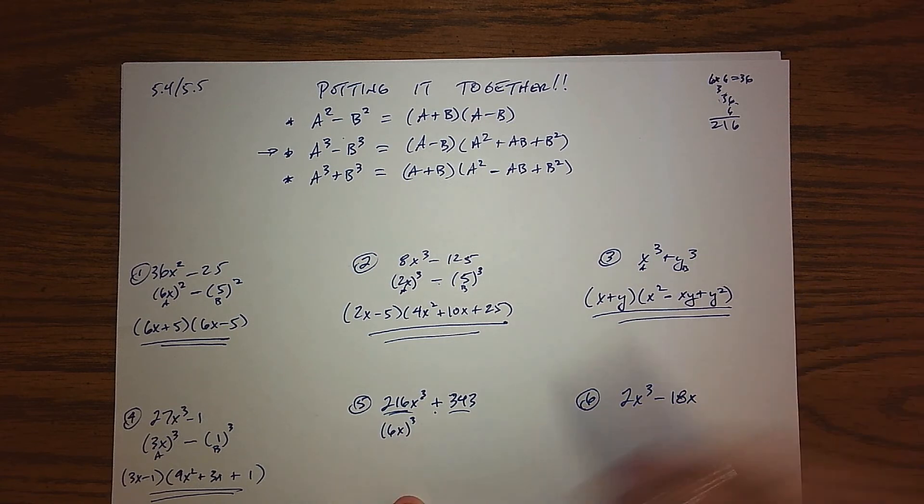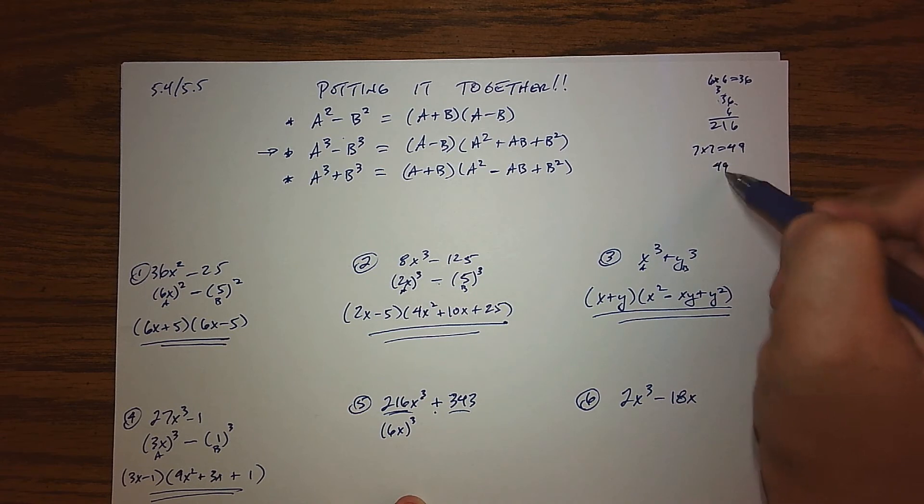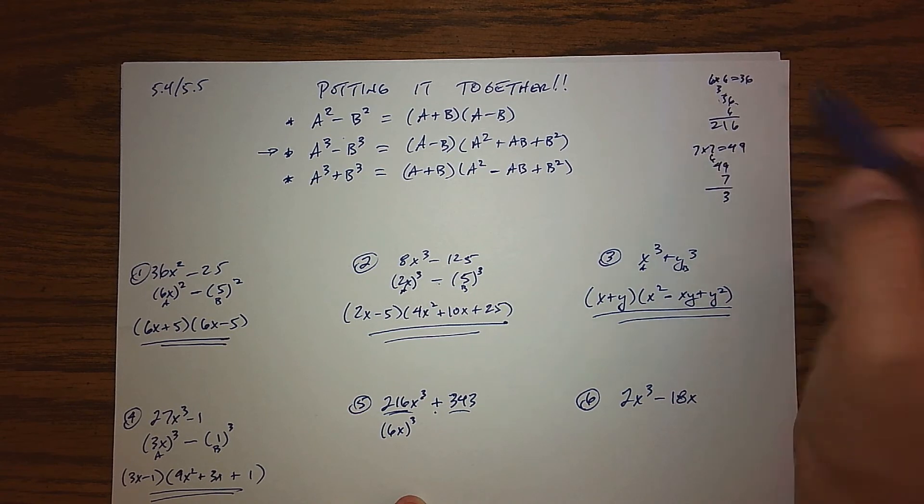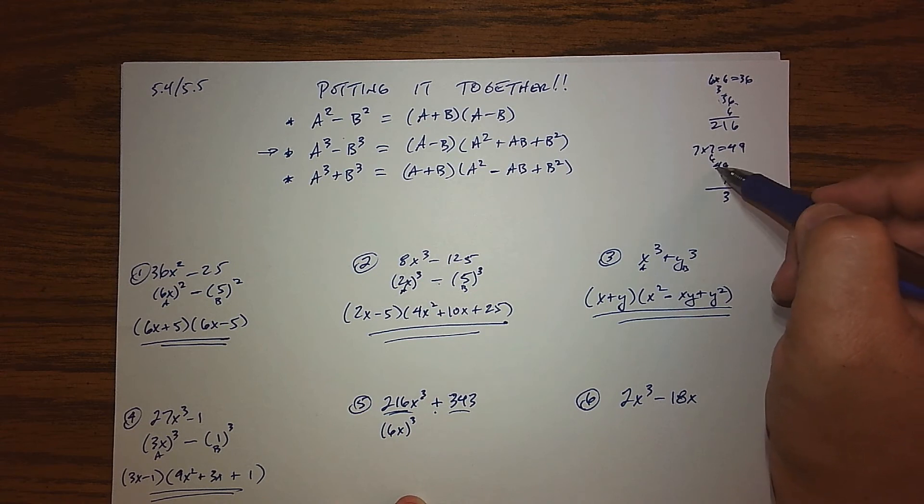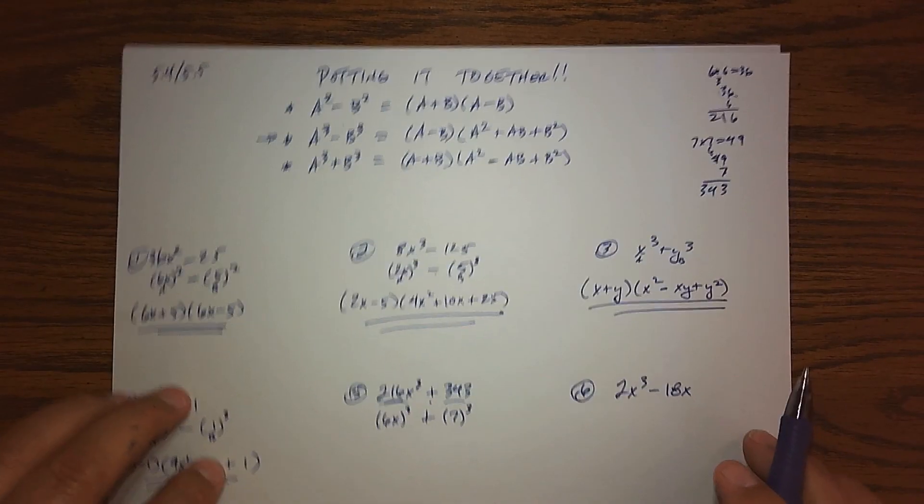343—just put your thinking caps on. What number is cubed here? Are you thinking 7? You're right. 7 times 7 is 49, and then taking another 7, 9 times 7 is 63, carry that 6, 4 times 7 is 28, and plus that 6 gives us 343. So just add that to your little laundry list of perfect cubes.